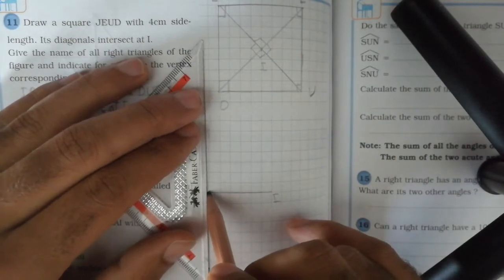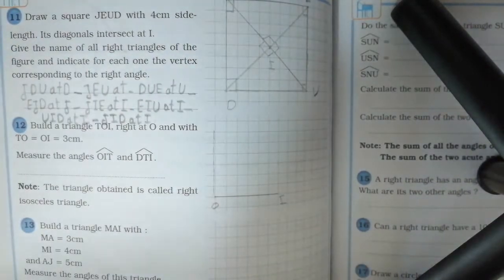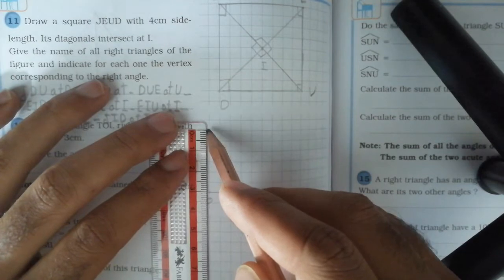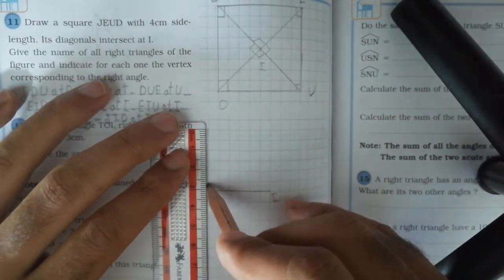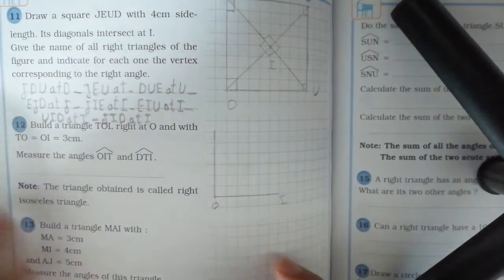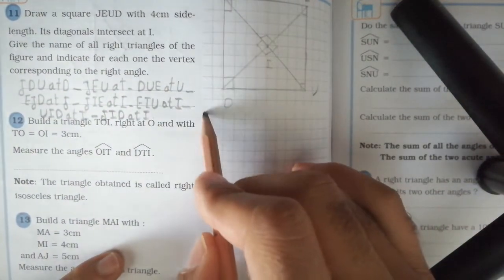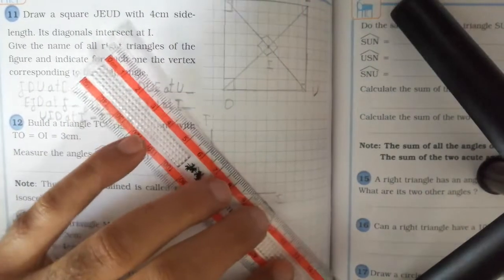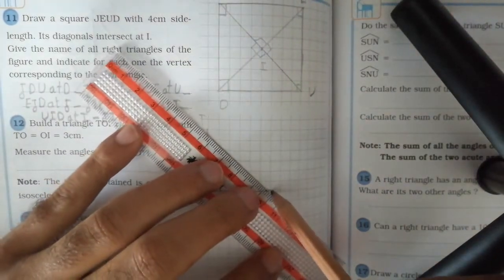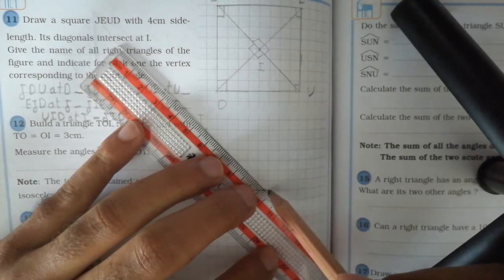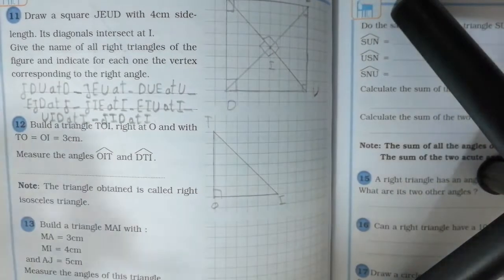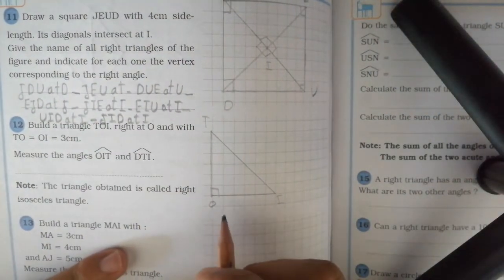By this way we draw the perpendicular side, then we make its length 3 cm. It's called OT. At last, we join the two points T and I to obtain the right triangle at O.